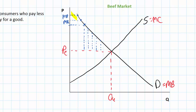Assuming the demand curve represents thousands or even millions of consumers, there are points all along this demand curve representing individual consumers who are willing to pay more than the actual price of PE. The area therefore below the demand curve and above PE represents graphically the additional benefit or happiness of all the consumers who bought beef at a price lower than they were willing and able to pay.